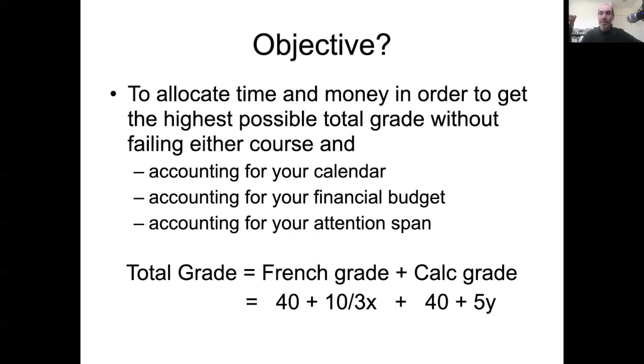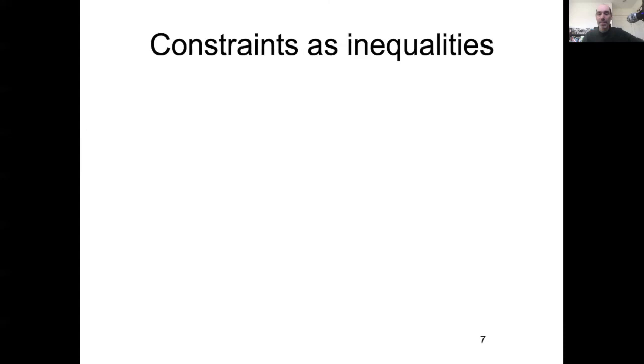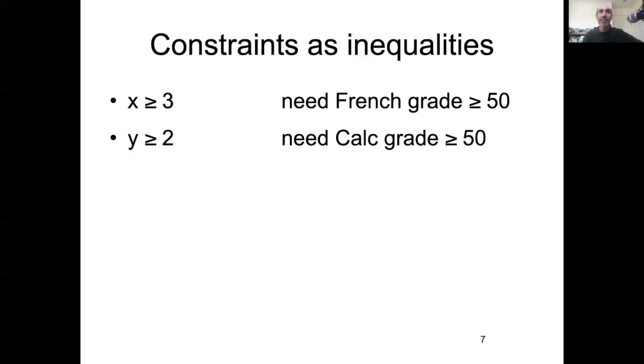So we have our key objectives, our key variables, our objectives. And now we need to write down our constraints. We're going to specifically write them down as inequalities. So first of all, there's a minimum score you need to get to pass. We said that that's a constraint. Because you could have solutions that maximize the problem, maximize your total grade that resulted in you failing one of the classes. So you need to spend at least three more hours on French to get that up to 50 points. You need to spend at least two more hours on calc to get that up to 50 points. The total amount of time, x plus y, has to be less than or equal to 11 hours, because that's the amount of time you have allocated.